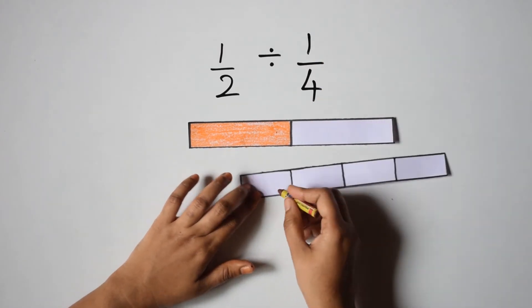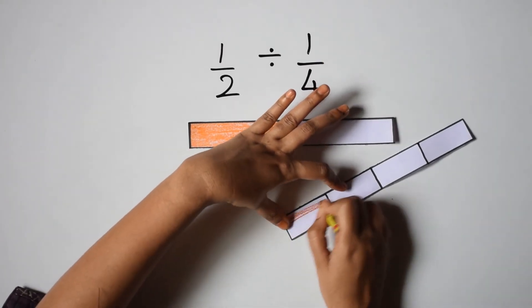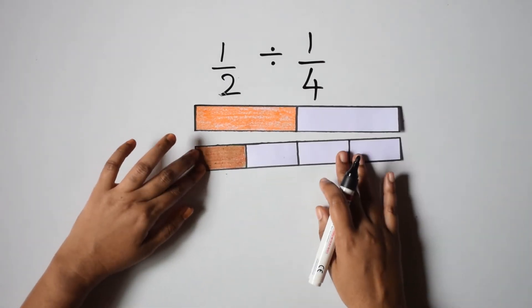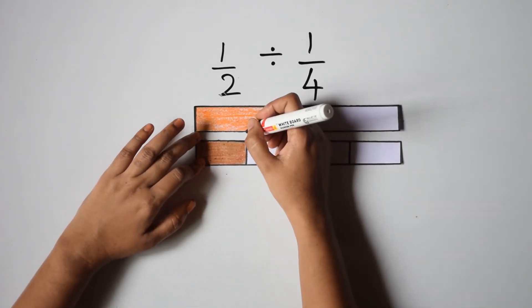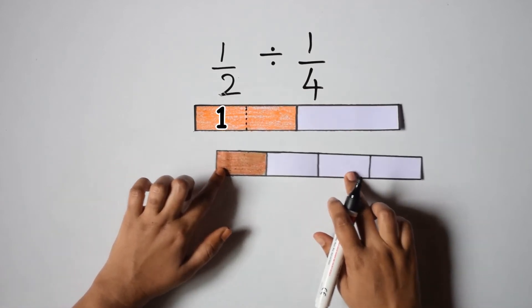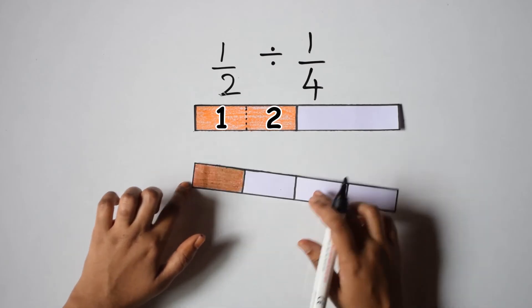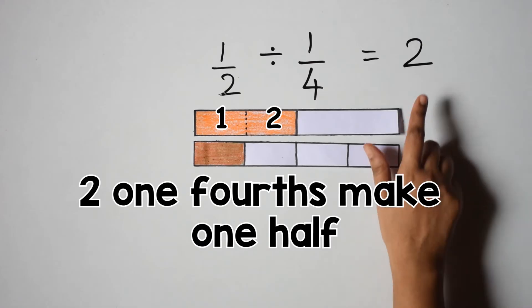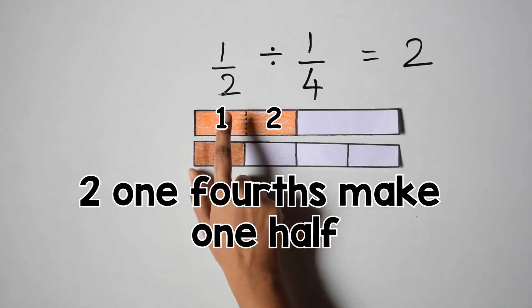Now how many one fourths make one half? Let me draw a line here. We can see that 1, 2. 2 one fourths make one half. So the answer means that there are 2 one fourths in one half.